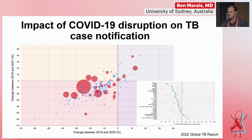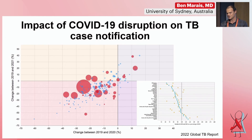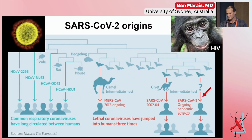For TB, we have good data to track what has happened to case notification in different countries. On the x-axis you can see the impact of 2020, and on the y-axis the impact of 2021 compared to 2019, showing massive reductions in case notification in most of the big high-incidence TB countries. This suggests many patients went undiagnosed and untreated during the COVID disruption, and children with TB represent community-level transmission.